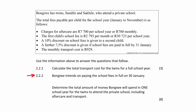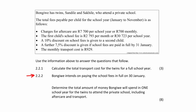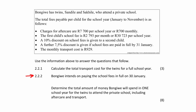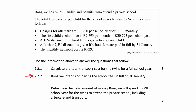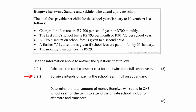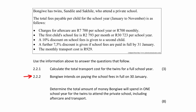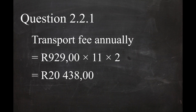In question 2.2.2, you are instructed to calculate the total amount of money payable in one school year for the twins to attend the school, including aftercare and transport, if the parent intends to pay the school fees in full by the 30th of January. From question 2.2.1, the total transport cost was calculated as 20,438 Rand.